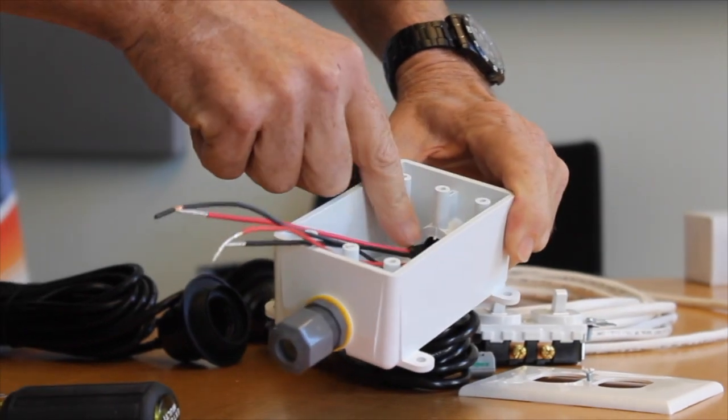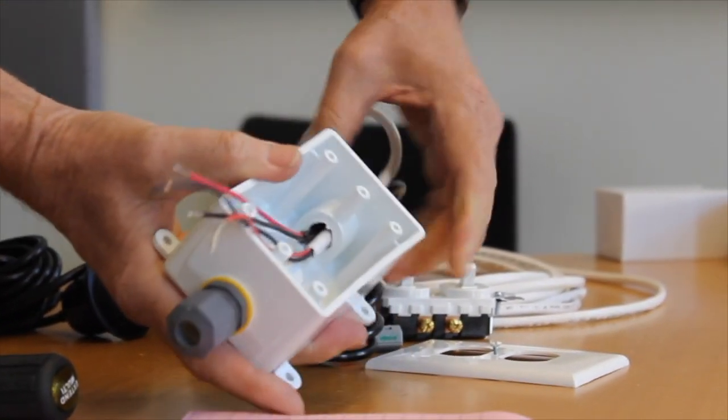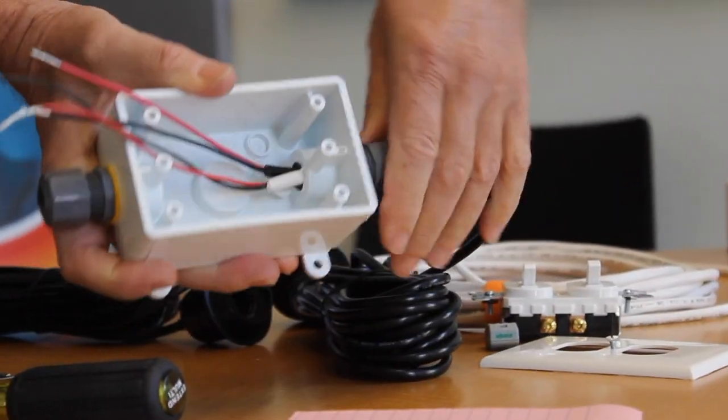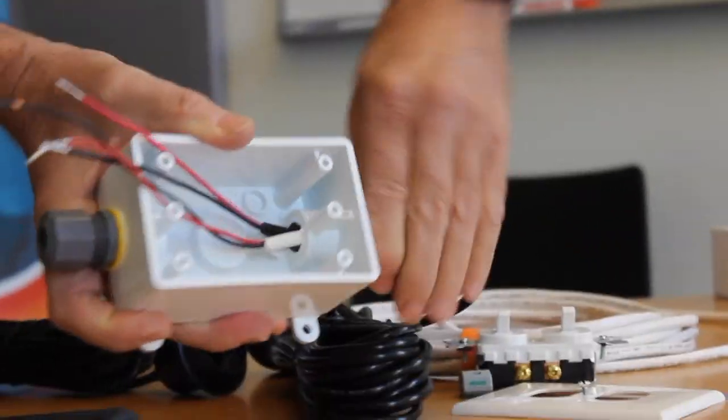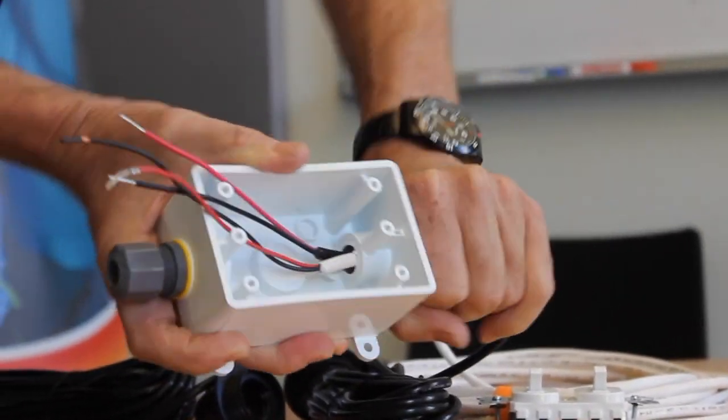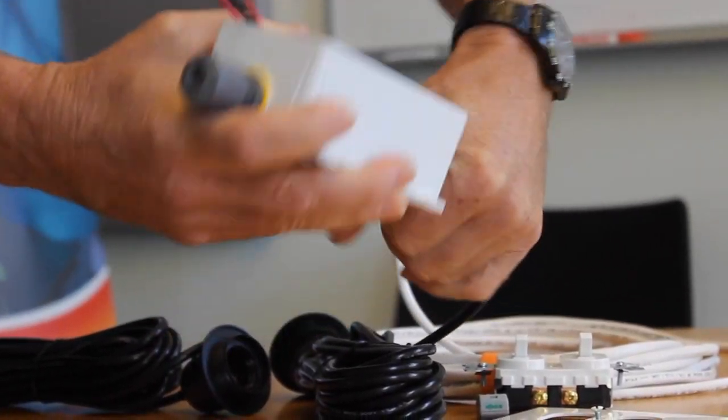Now I'm going to take this cap and I'm going to twist it closed. And when I twist this closed, what this does is it applies pressure to the cable so that it grips the cable. So I just need to do this hand tight.